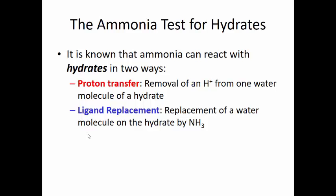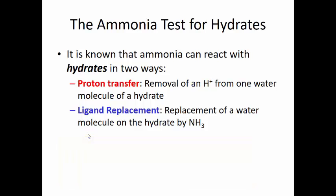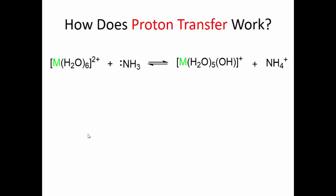Proton transfer means you remove H⁺ from one water molecule of the hydrate. It can also react with the hydrate by doing what's called ligand replacement. A ligand is just a group — like an atom or a molecule — that's bound to the metal using a lone pair of electrons. With ligand replacement, you end up replacing one of the water molecules with an ammonia molecule.